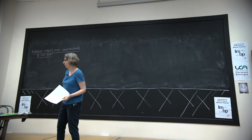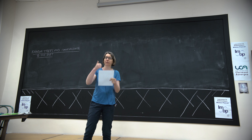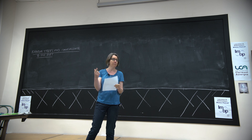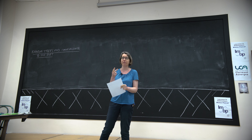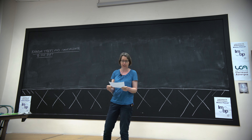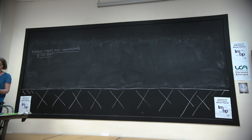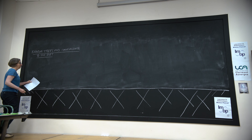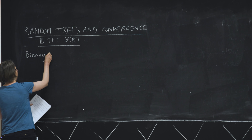Good morning. So we've done lots of setup: we thought about our trees, which are going to be the continuum object we're interested in; we set up the right topology to think about convergence; and we've thought about a framework for our discrete trees. Now let's introduce the general family of random trees whose scaling limits we're going to study. This section is on random trees and convergence to the Brownian continuum random tree. Let me introduce the notion of a Bienaymé tree.